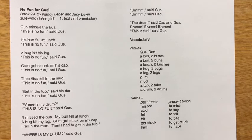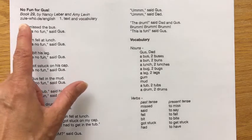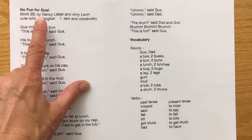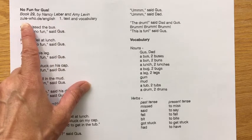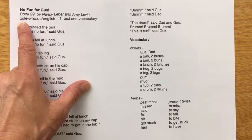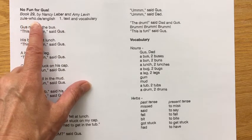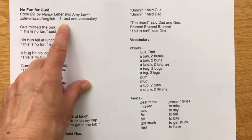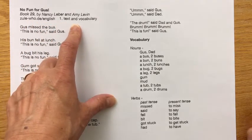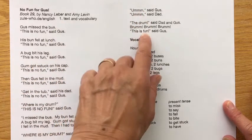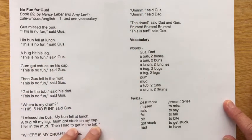Here is the text and vocabulary for 'No Fun for Gus', book 29 by Nancy Labor and Amy Levin. This paper can be found at zula-who.de slash English under number one text and vocabulary. Here is the text just like in the story and here we have the vocabulary.